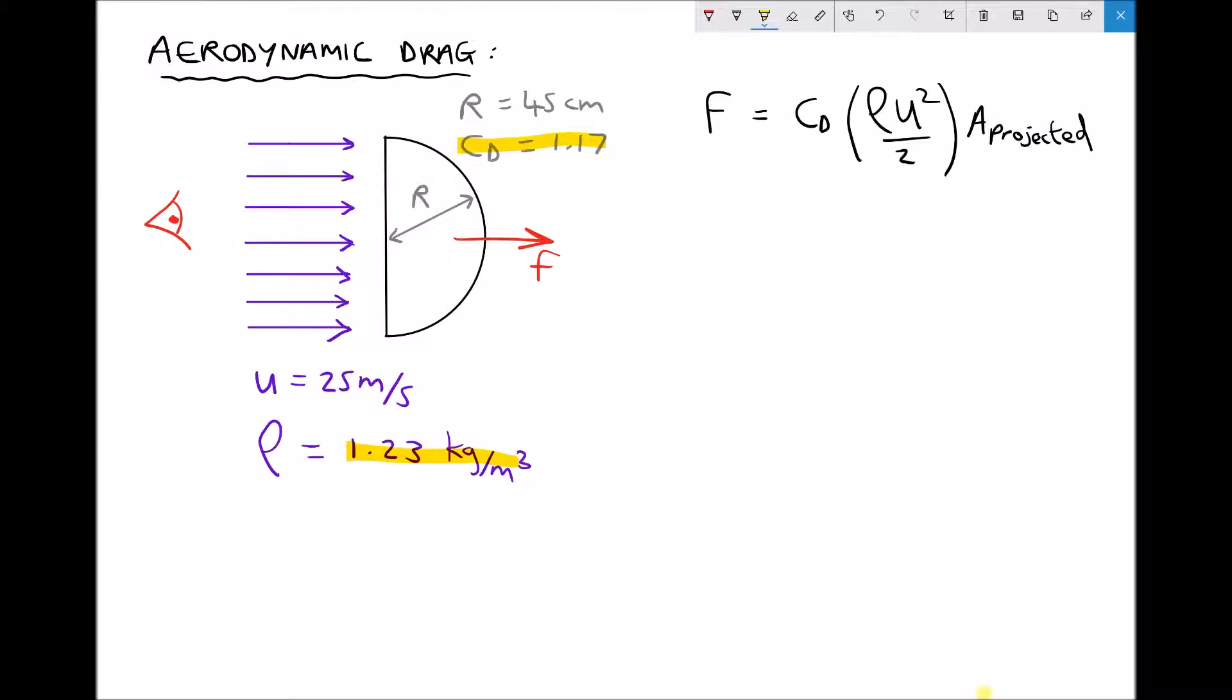Let's run the calculation. F equals the coefficient of drag, 1.17, times the density of the air, 1.23, times the velocity of the air, 25 squared over 2,